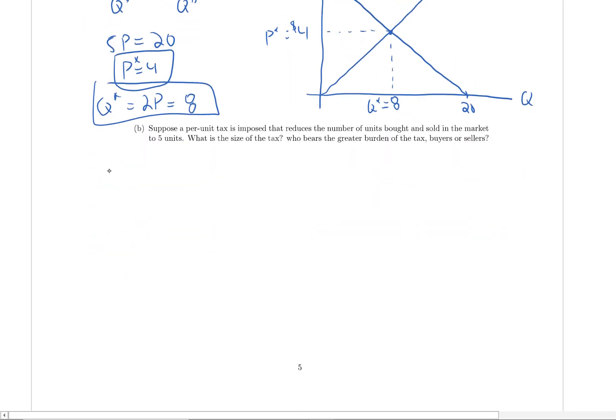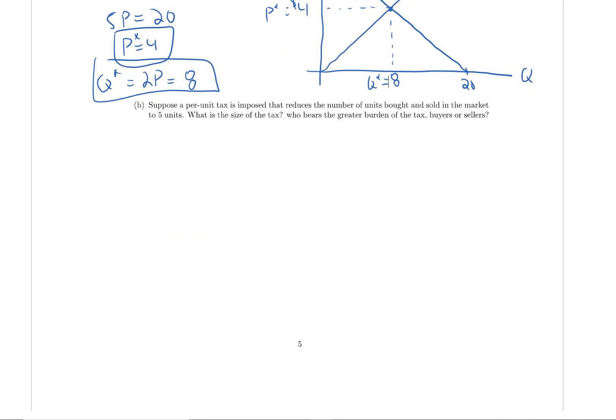Scrolling down, we'll take a look at question B. So it says, suppose a per unit tax is imposed that reduces the number of units bought and sold in the market to 5 units. What is the size of the tax? Who bears the greater burden of the tax, buyers or sellers? So this is a little bit of a different question that we've seen. Oftentimes we're kind of given the size of the tax and ask what it does, what's the price of buyers, what's the price of sellers, what's the equilibrium quantity with the tax. Now it's saying this is the quantity with the tax. What's the size of the tax?